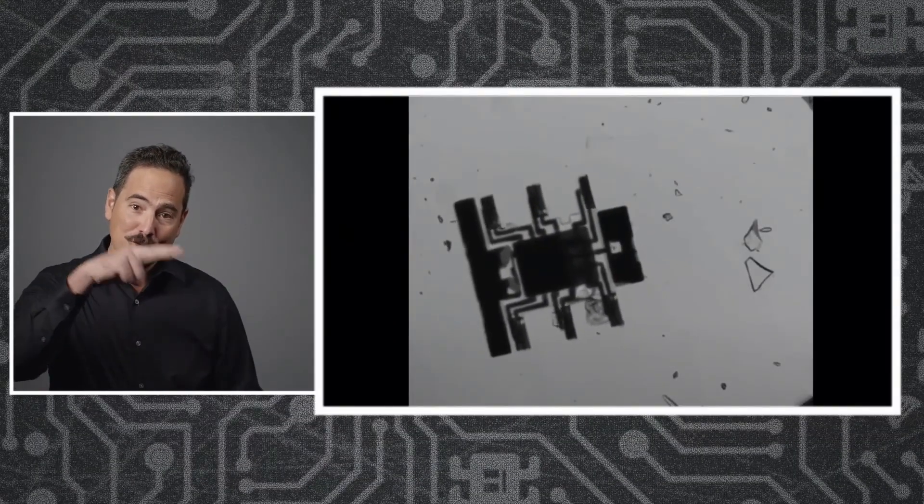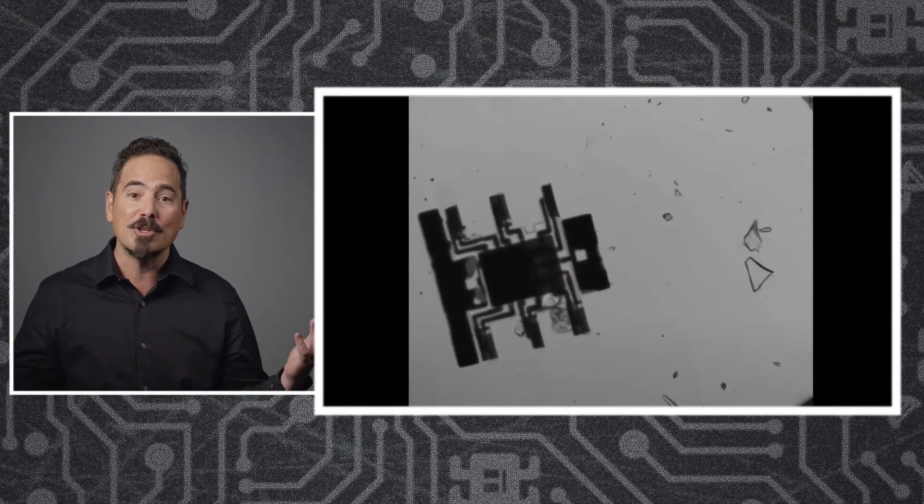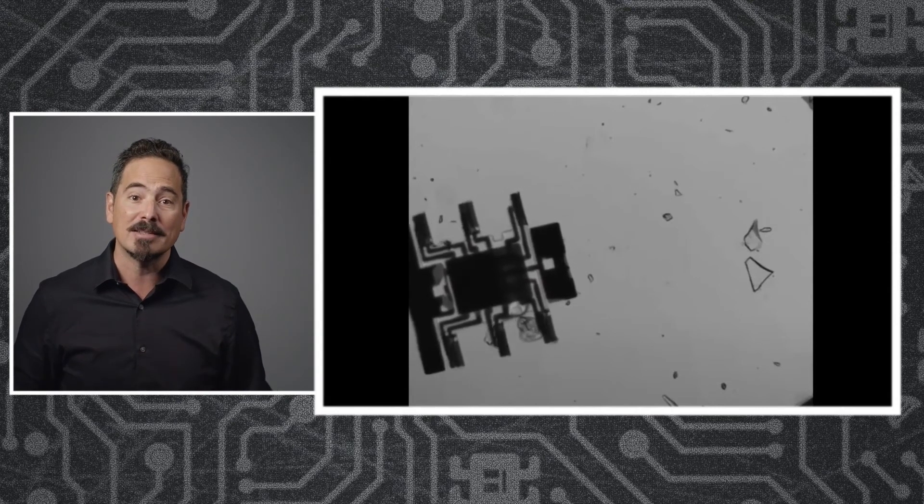And here you go. This is AntBot. It uses a hexapod gait—so a tripod on one side and a tripod on the other—to move itself forward. And all we have to do is put this robot in sunlight and the brain does the rest of the coordination.